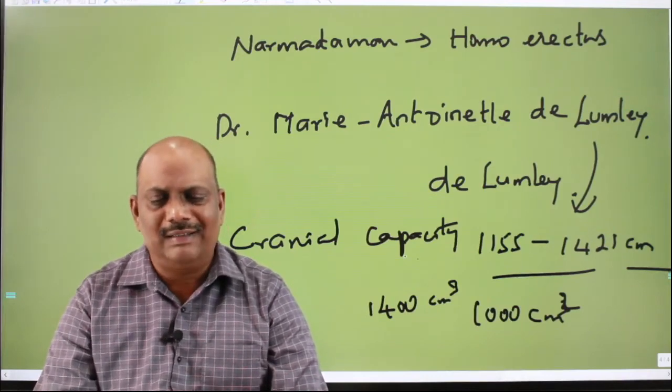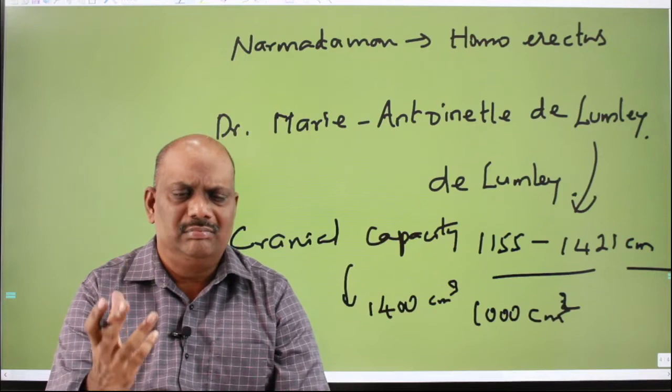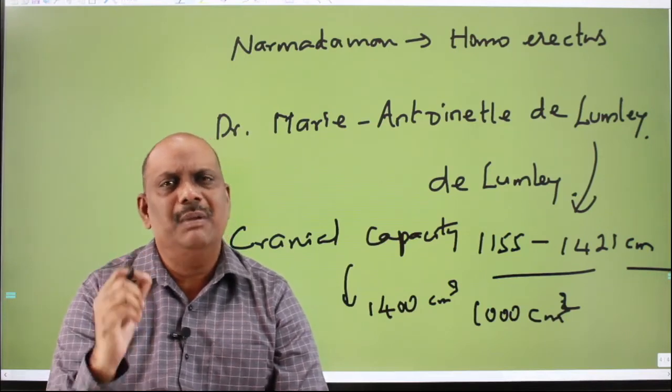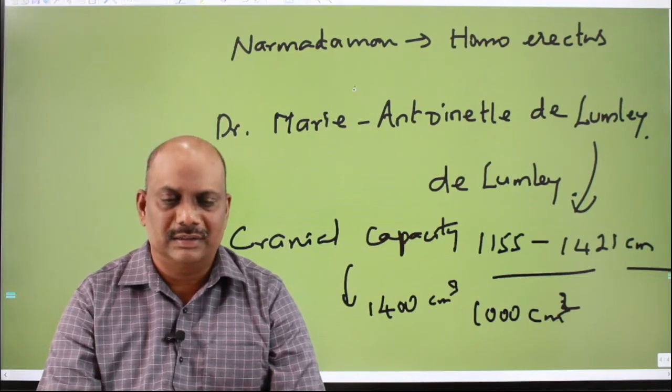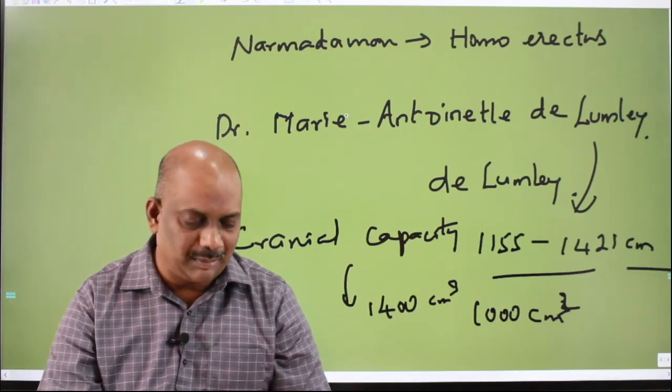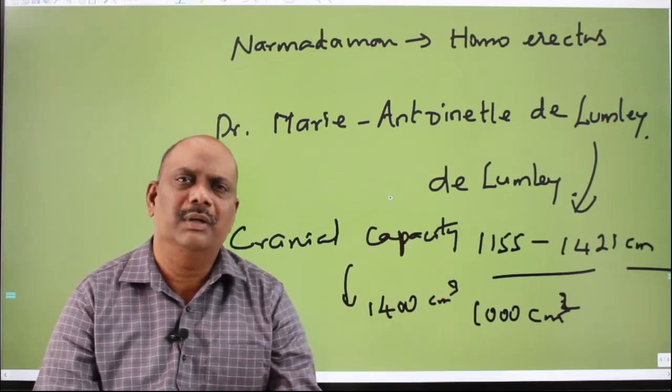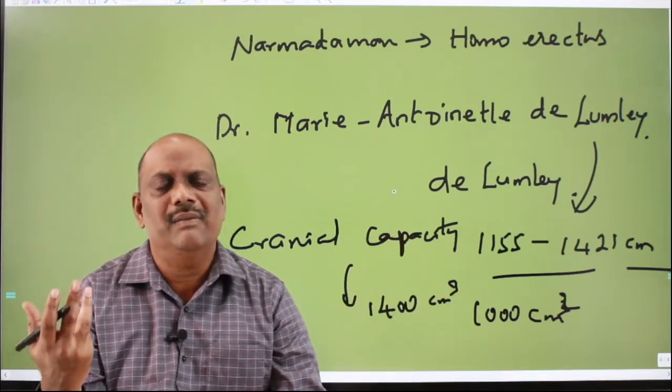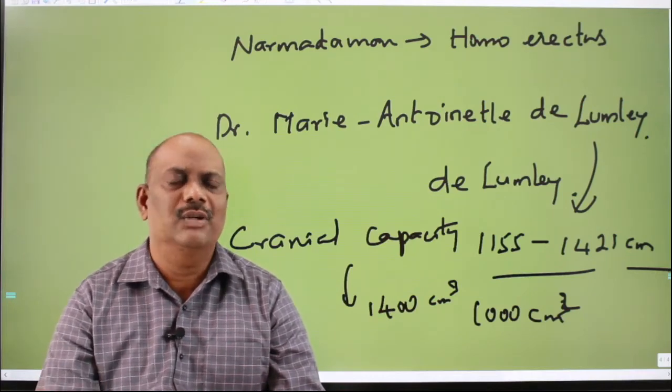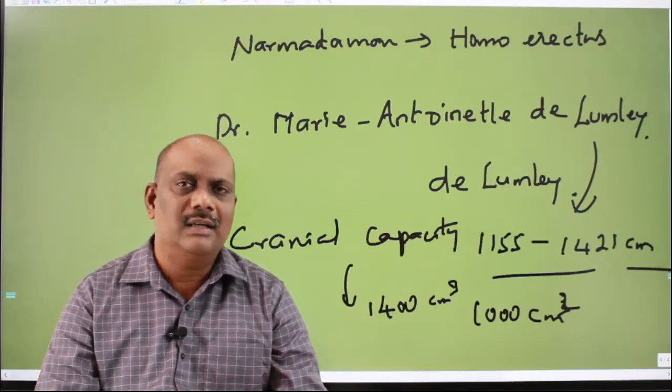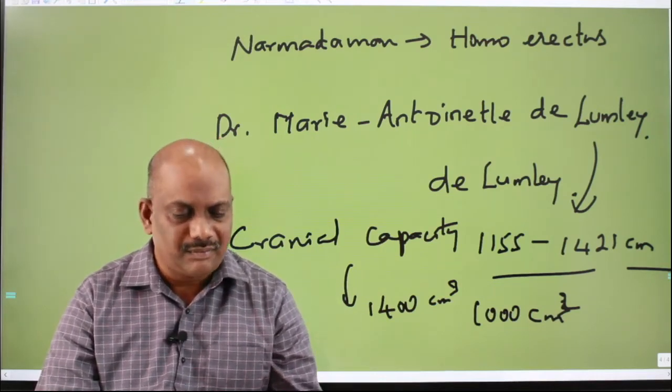But De Lumley pointed out that Narmada man may not be a Homo erectus. He may be an evolved Homo erectus, or he may be a Homo sapien. Because anatomically, he nears off to the top of Homo sapien. But 6 lakh years back, where we had Homo sapiens, even Neanderthals could not manage to, or Neanderthals did not make their presence during this period.